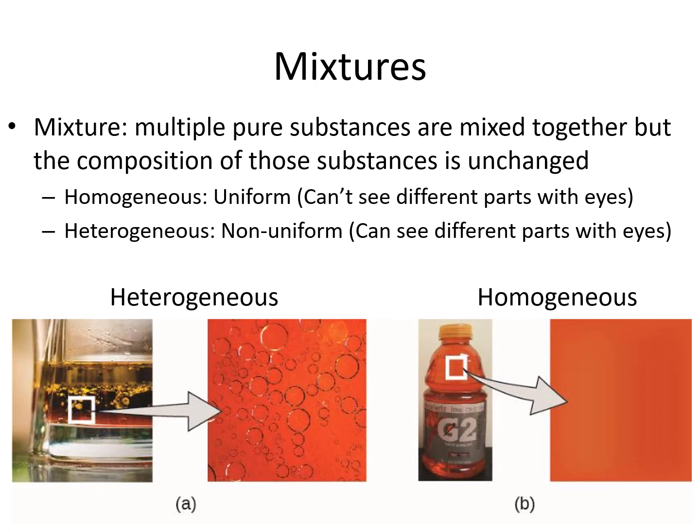With our eyes, we can't tell the difference between the substances in a homogeneous mixture. For example, Gatorade is a homogeneous mixture — it contains water, salts, and sugars, but all we see is a red liquid. Hetero means different, so heterogeneous means we can see the different substances. For example, in Italian salad dressing, or when we mix oil and vinegar, we can see the different parts.